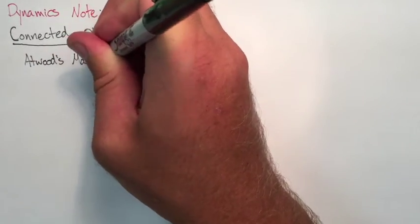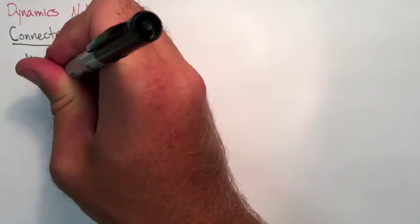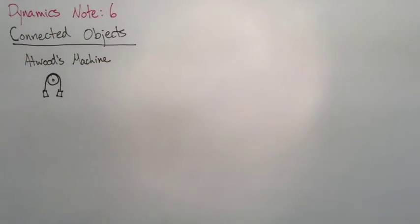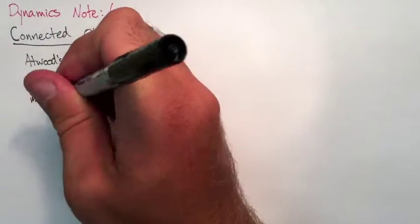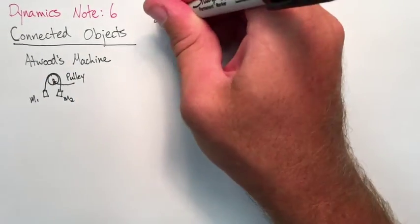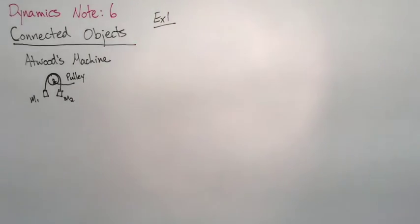An Atwood's machine is basically a pulley with two masses draped over it. We always assume that the string connecting them is massless and the pulley has no inertia. This is basically an old mass or weighing system that they used to use to figure out the weights of things.